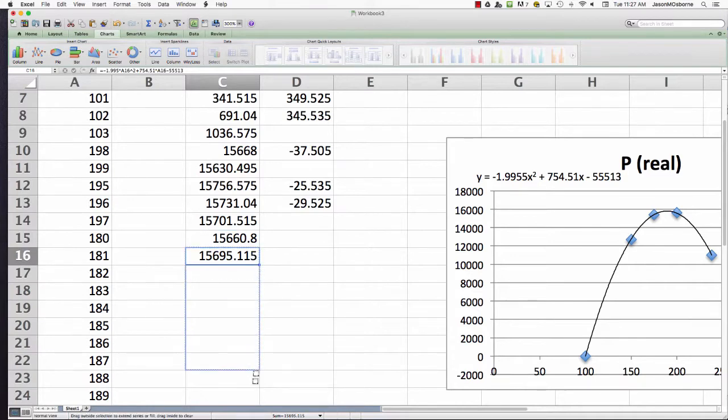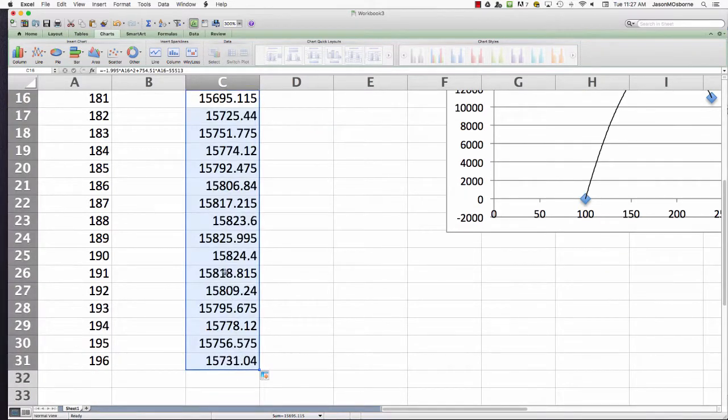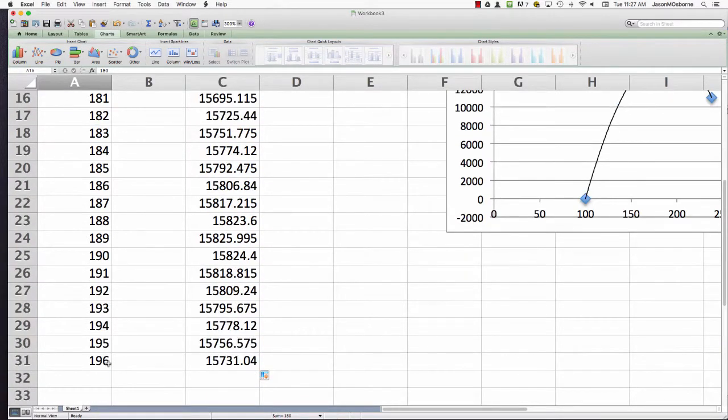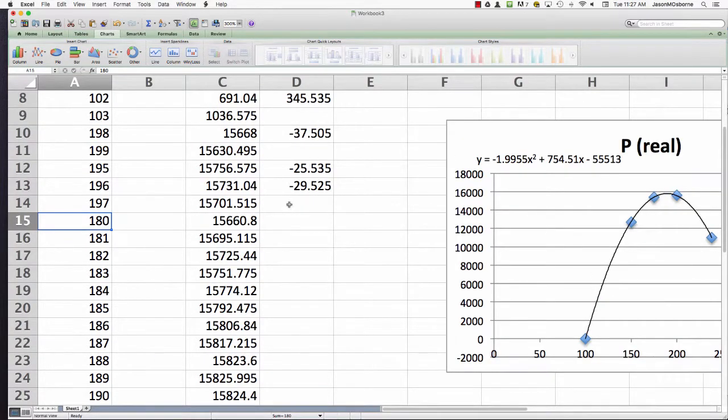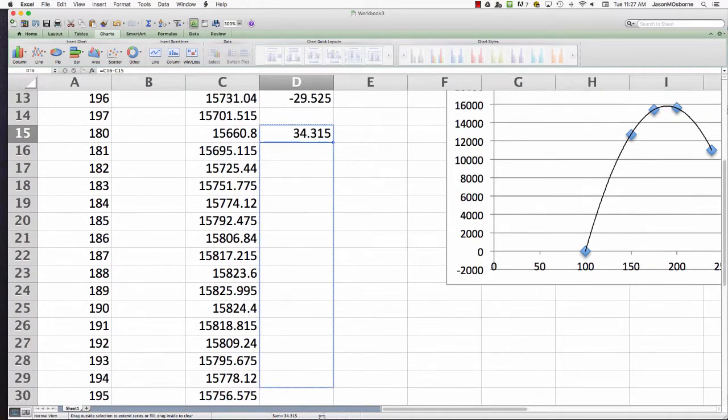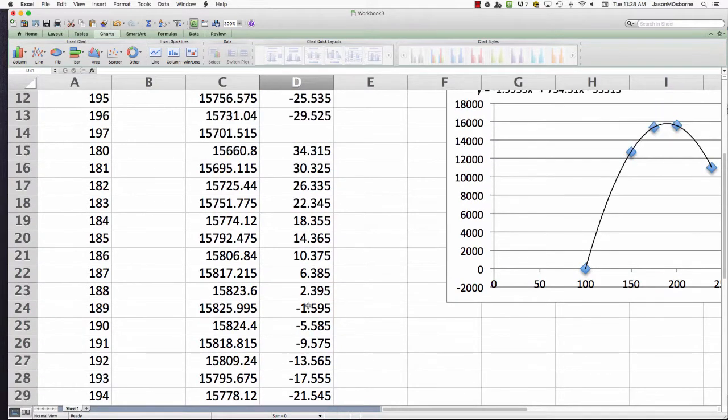Here are all the profit numbers for the 180 to 196 level. Now what we need to do is compute the marginal profits. It's the profit at 181 minus the profit at 180, so there's $34. So now we know for selling the 181st item we're making $34.31, we're going up in profit. Now let's drag that formula down. You can see here that from the 182 to 183 level, $26.33 was made. But right here at around the 188 level, to sell that 189th item we only made $2.39. At the 189 level, you sold that 190th item, we lost $1.50. So what we can see here is that your marginal profit column goes from positive to negative around the 188 level.